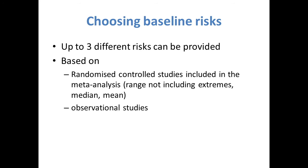When choosing which baseline risk to provide, consider that you can provide up to 3 risks for each outcome, and these risks can be based on the control group risks that were found in the randomized control trials in the review, or from the results from observational studies.